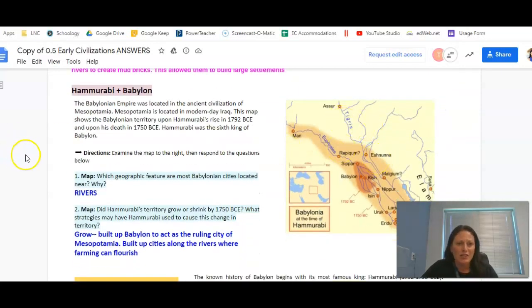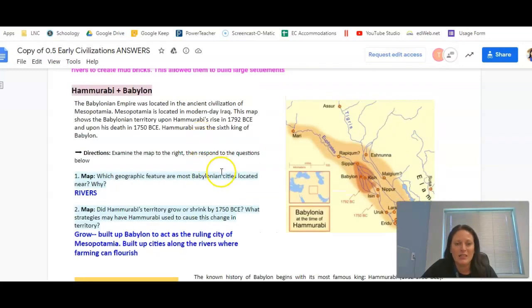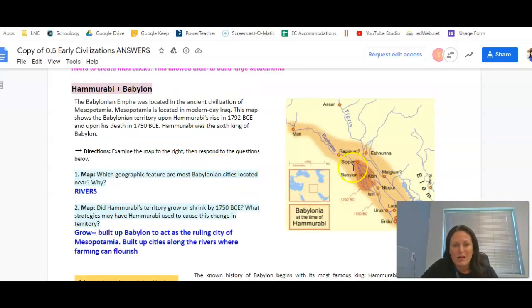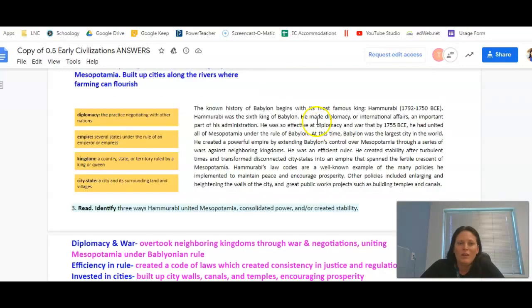This next section talks about Hammurabi and Babylon. Here's a map - there's the Babylon area. You can see here that in 1792 BC it was this big, and then in 1750 BC it grew even bigger. What geographic features are most Babylonian cities located near? They are located near rivers. Did Hammurabi's territory grow or shrink by 1750 BC? We just discussed how it grew. It built up Babylon to act as the ruling city of Mesopotamia and built up cities along the rivers where farming can flourish.